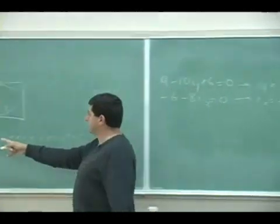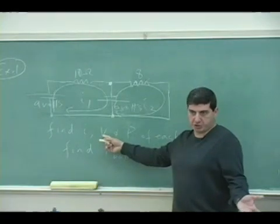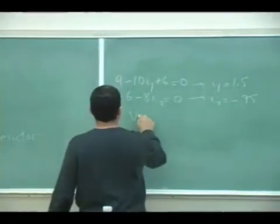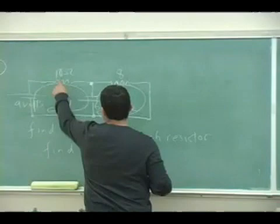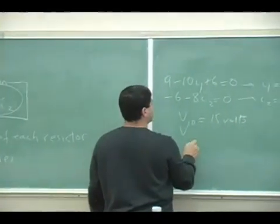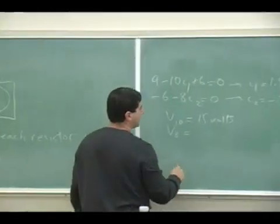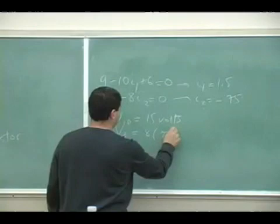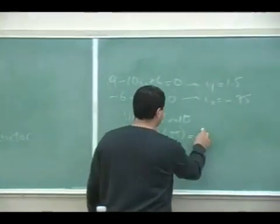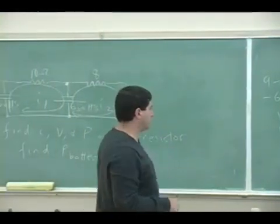Once we get the current, how do we get the voltage across each resistor? We'll just multiply the current going through each resistor times the resistance. So the voltage across the 10-ohm resistor is going to be 10 times I1. So it's going to be 15 volts. And voltage going through the 8-ohm resistor is going to be 8 times 0.75, which is going to be 6 volts. So right now, I'm just taking the absolute value of the voltage.